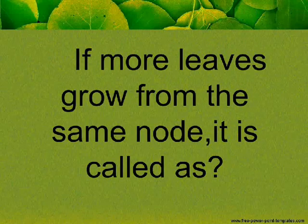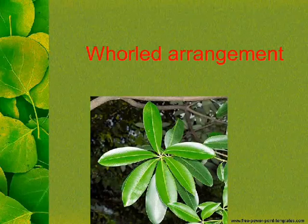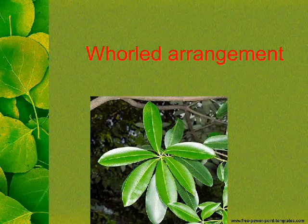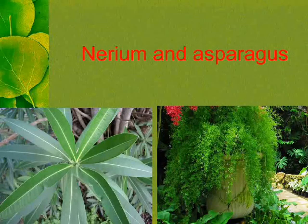If more than two leaves grow from the same node, it is called Whorled Arrangement. Examples of Whorled Arrangement include Nerium and Asparagus.